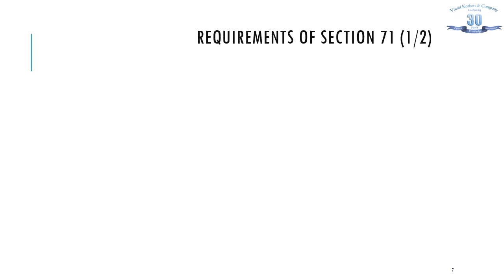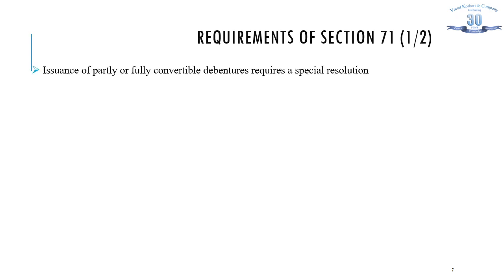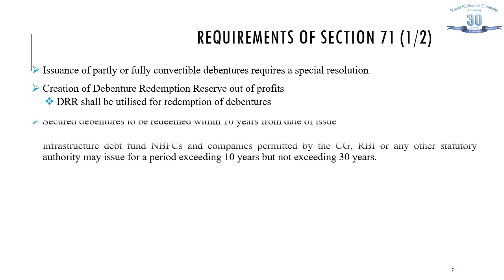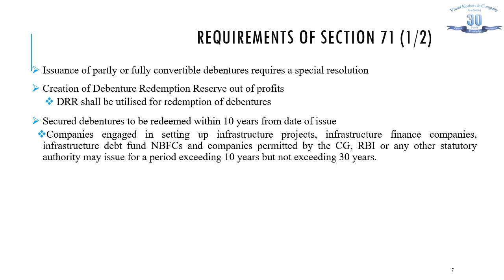Section 71 of the Companies Act 2013 requires the provisions related to the issuance of debentures to be complied with. The issuance of partly or fully convertible debentures requires a special resolution as per Section 71. The section further requires creation of a debenture redemption reserve out of the profits of the company, which shall be utilized for redemption of debentures only. Secured debentures are to be redeemed within 10 years from the date of issue. However, certain companies in sectors such as infrastructure projects, infrastructure finance companies, infrastructure debt funds, NBFCs, and companies permitted by the central government, RBI, or any other statutory authority may issue such debentures for a period exceeding 10 years but not exceeding 50 years.